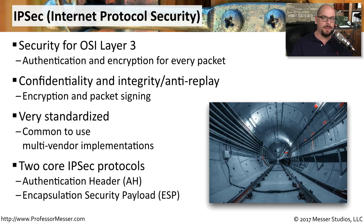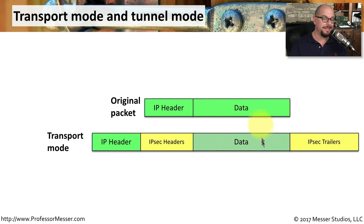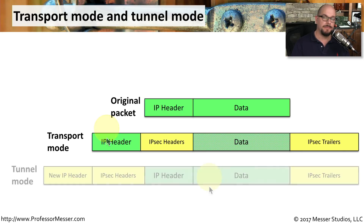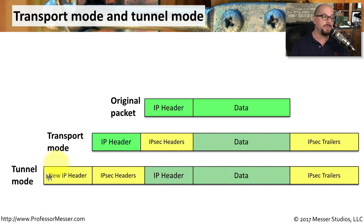There are two core protocols associated with IPsec: AH, or the Authentication Header, and ESP, or the Encapsulation Security Payload. IPsec can use two different modes of communication: transport mode and tunnel mode. You start with an original packet containing an IP header and data. In transport mode, the data is encrypted with an IPsec header and trailer placed on either side, while the original IP header is used to deliver the packet to the remote site. In tunnel mode, both the IP header and the data are encrypted, wrapped with an IPsec header and trailer, and a completely new IP header is placed on the front of the packet. This means anyone observing the packet in transit won't know the actual IP destination, since all that information is encrypted in tunnel mode.